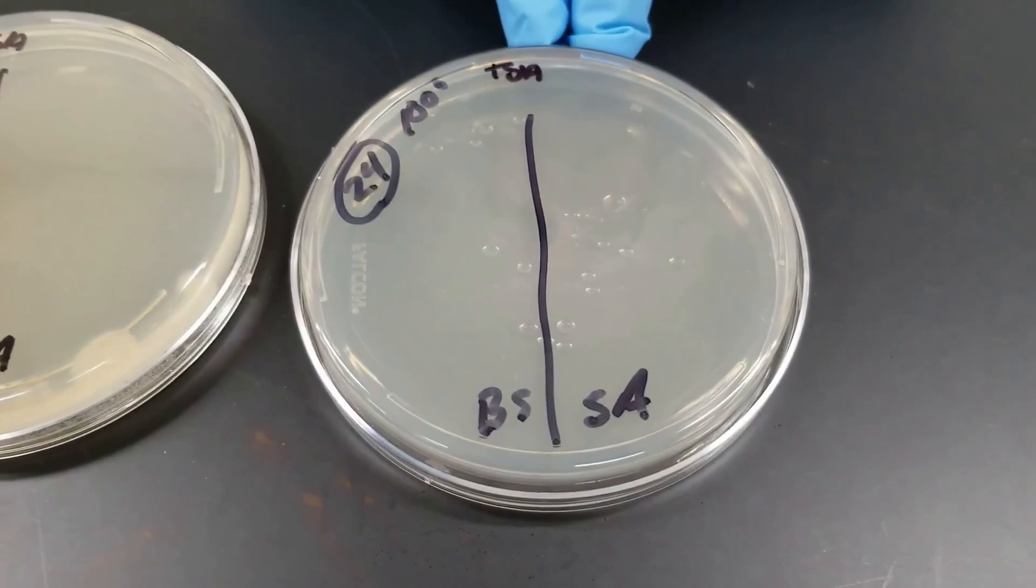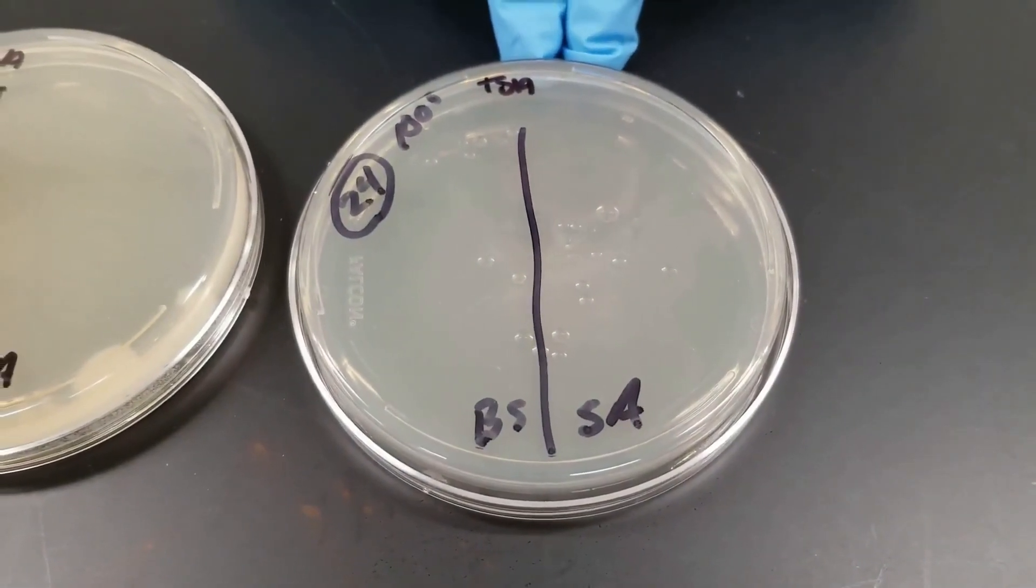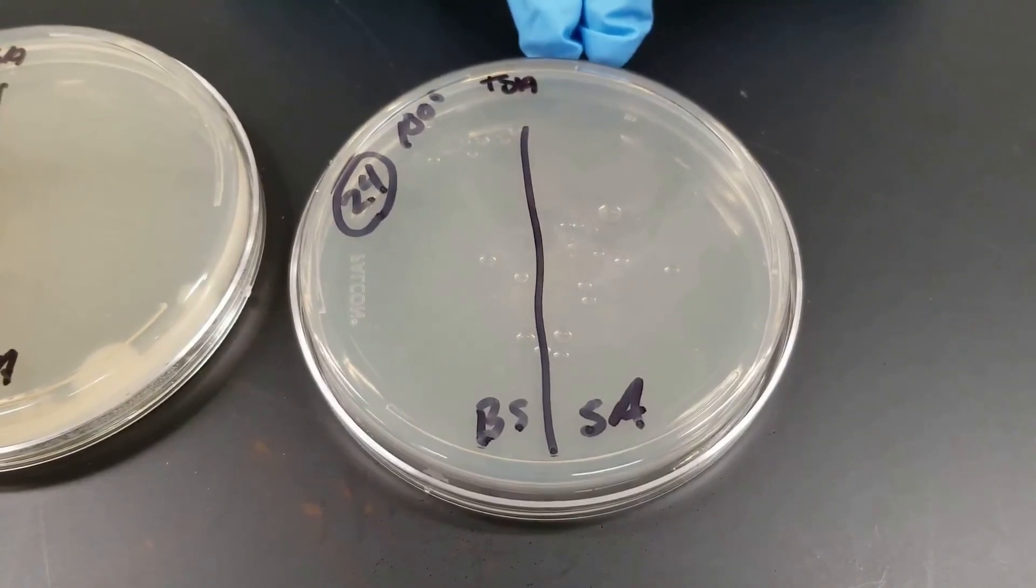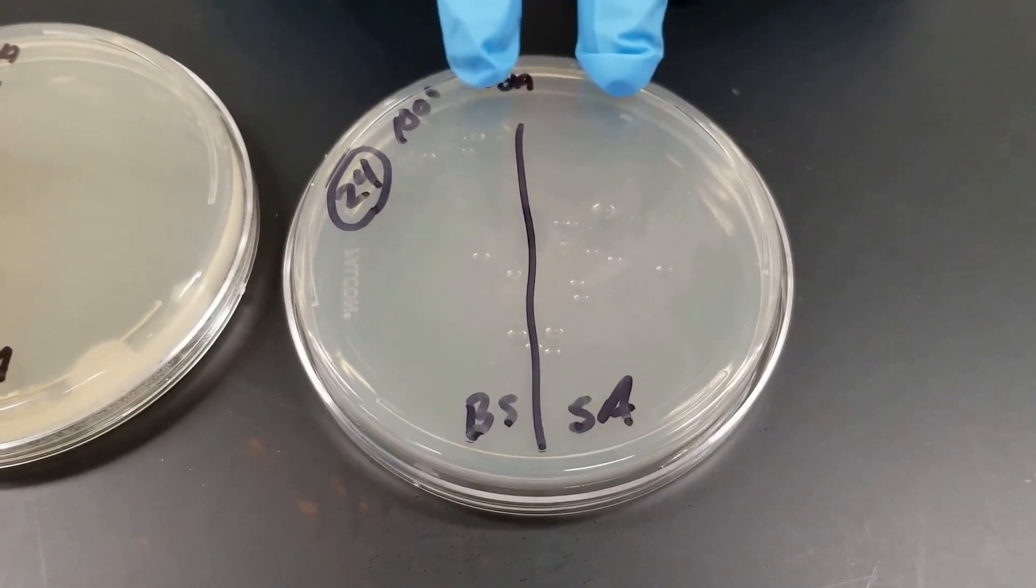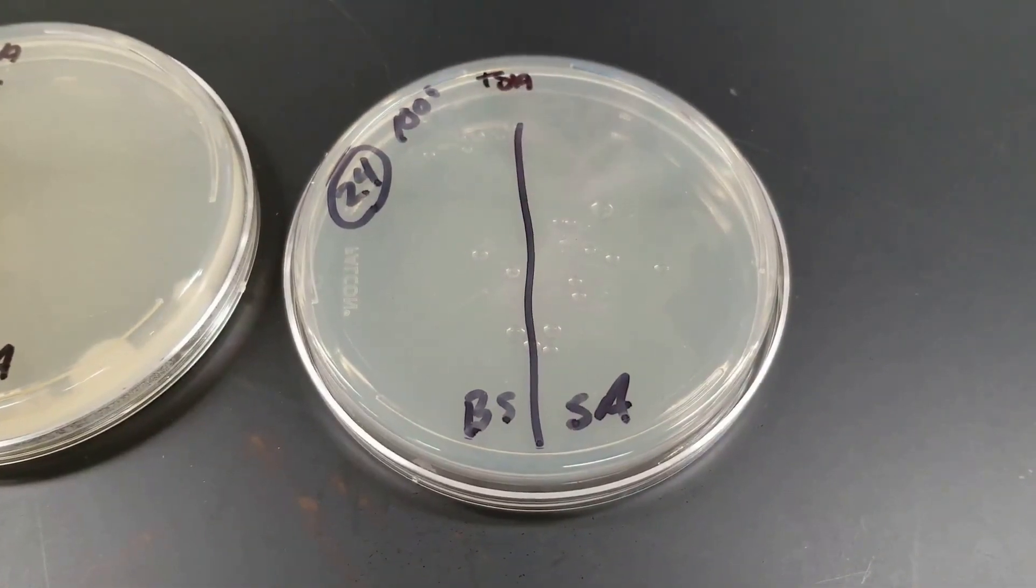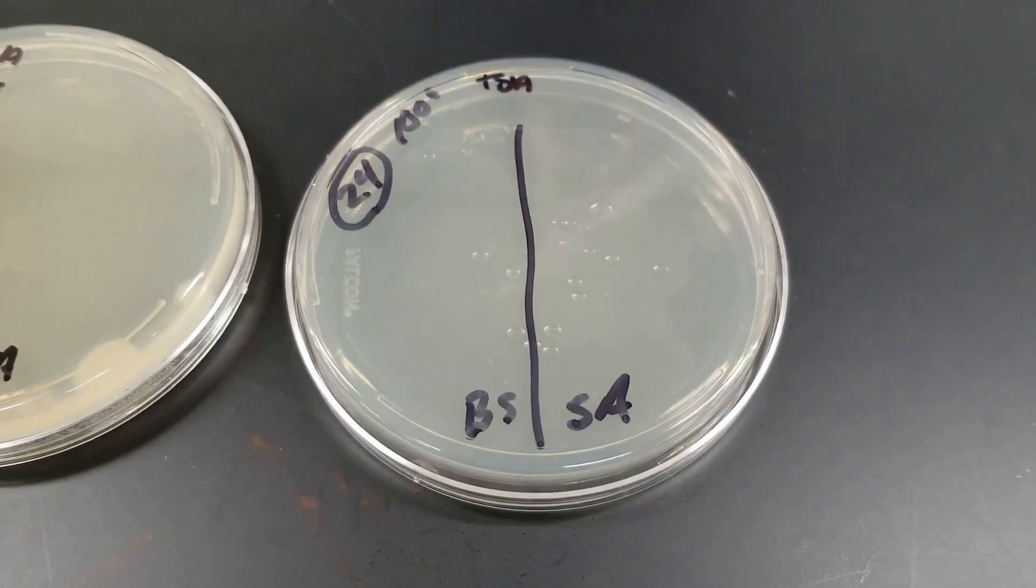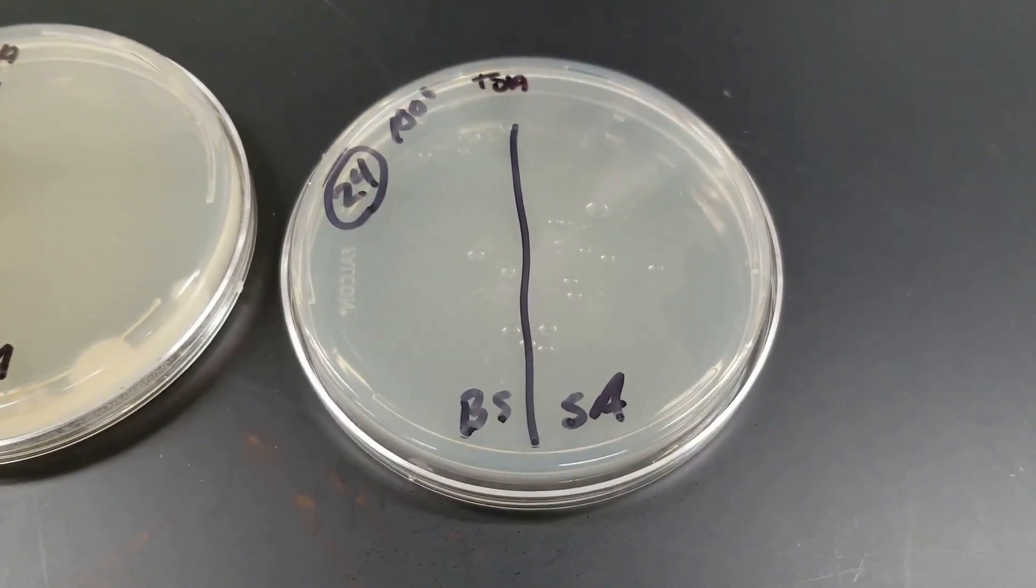This last plate, the culture was placed here at 100 degrees Celsius when water is boiling for 10 minutes. And as you can see, at this point now, both cultures were killed. So boiling for 10 minutes was effective at destroying even the endospores that Bacillus produced.